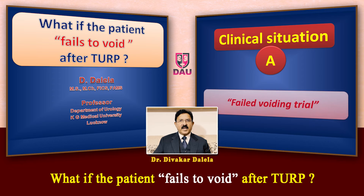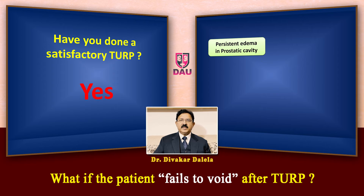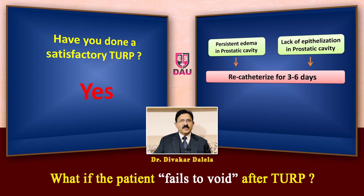In this situation of a failed voiding trial, how do you handle this frustrating situation for you and also for the patient? First, you should ask yourself: have you done a satisfactory transurethral resection of the prostate? If the answer is yes, then the reasons for a failed voiding trial may be some kind of edema persisting in the residual prostate cavity, or in some patients a lack of epithelization of the prostatic cavity. One or both of these reasons may be operational in your patient.